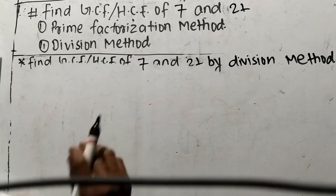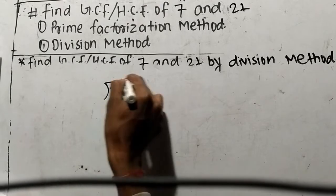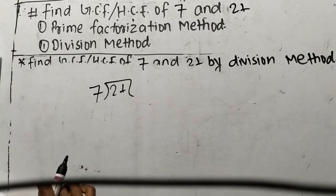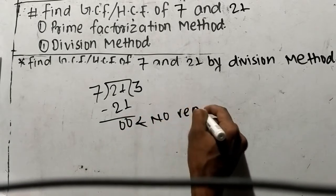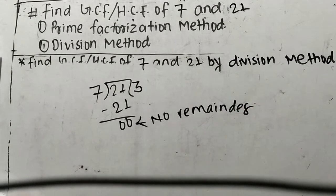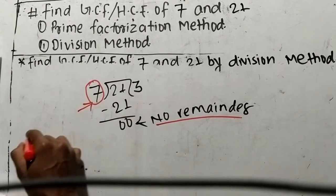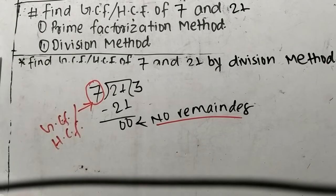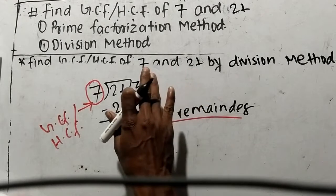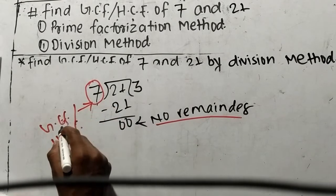Let's find out GCF or HCF of 7 and 21 by division method. While finding out GCF by division method, we have to divide the greater number, which is 21, by the lesser number, which is 7. Dividing gives 7 times 3, which is 21, and at last we have no remainder. The divisor 7 leaves no remainder, so if there is no remainder, the divisor becomes the GCF or HCF.